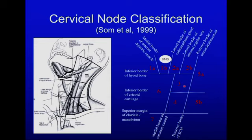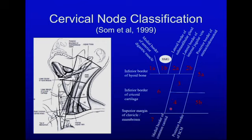To divide level three and level four, or level 5A and 5B, the landmark is the level of the cricoid. In practice, dividing level three and four is less important because most neck dissections will involve both. However, distinguishing between level three and level two, or level three and level six, is very important as those represent different surgeries.